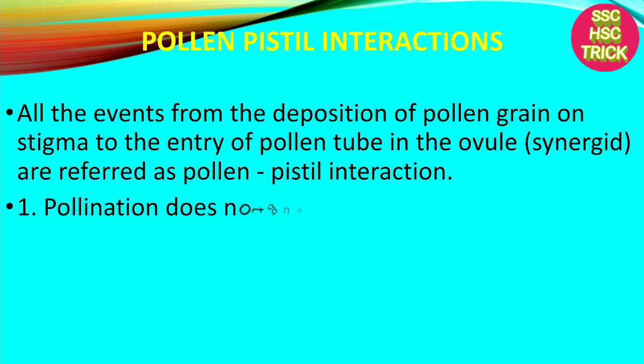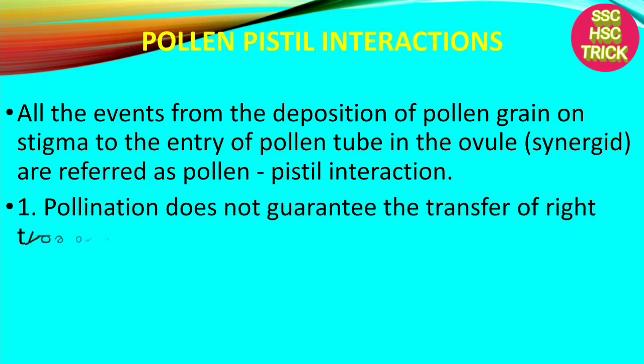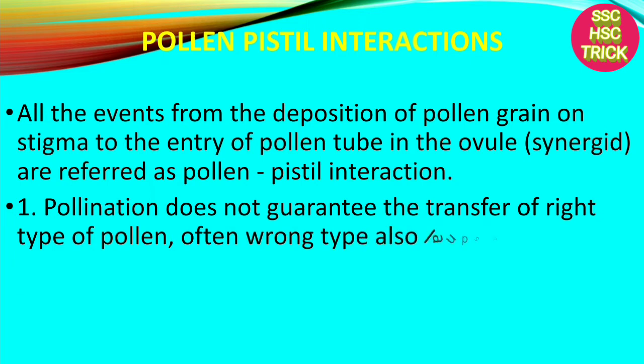When pollen-pistil interactions occur, basically sporophytic tissue is present. It begins with pollination and ends with fertilization.